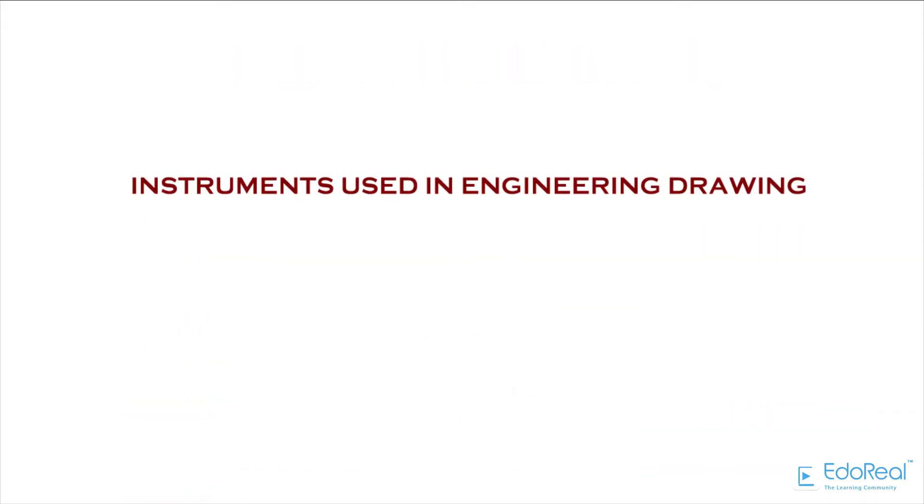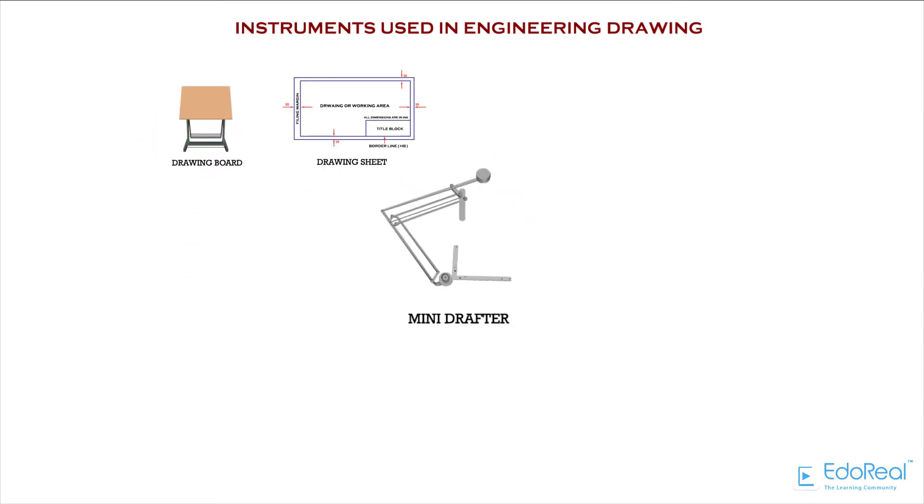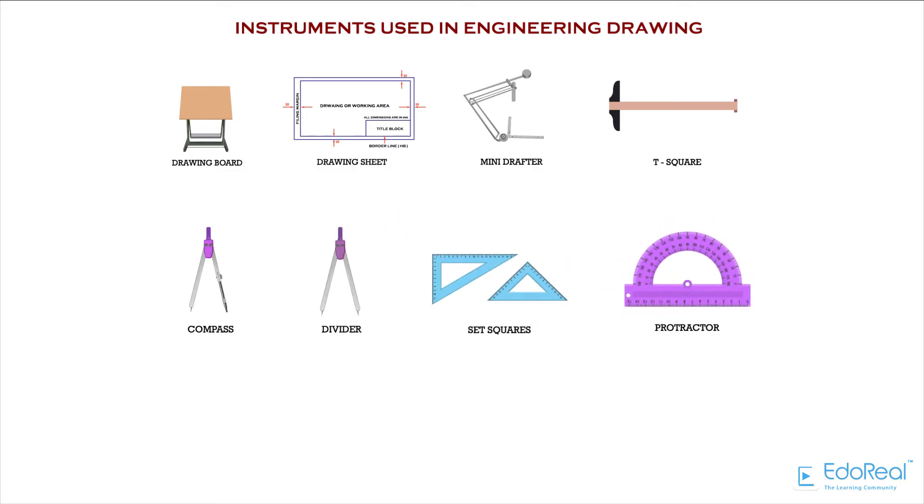Instruments used in engineering drawing: Drawing board, Drawing sheet, Mini drafter, T-square, Compass, Divider, Set squares, Protractor, French curves, Pencils, Eraser. Let us describe each and every drawing instrument in detail.